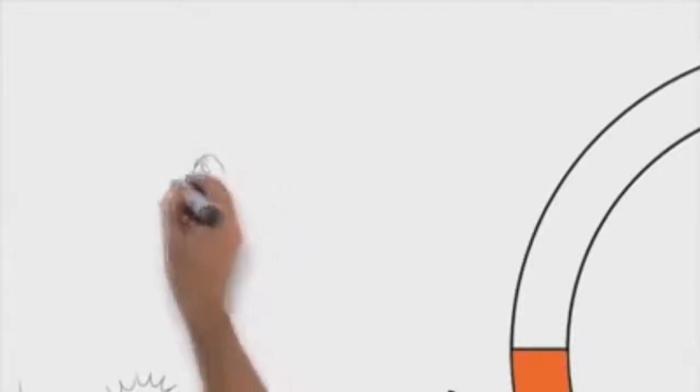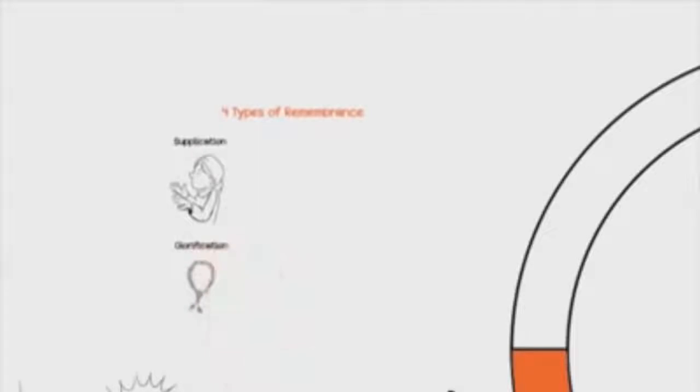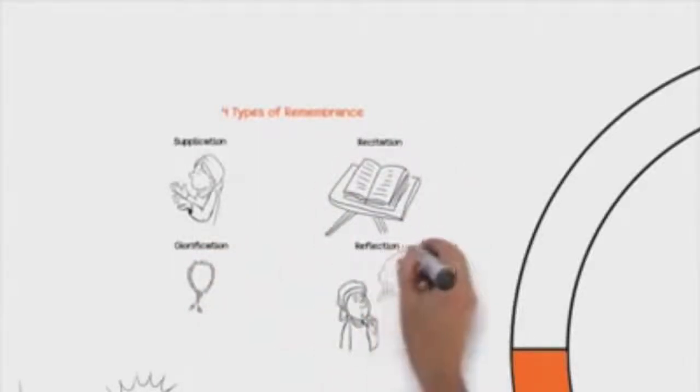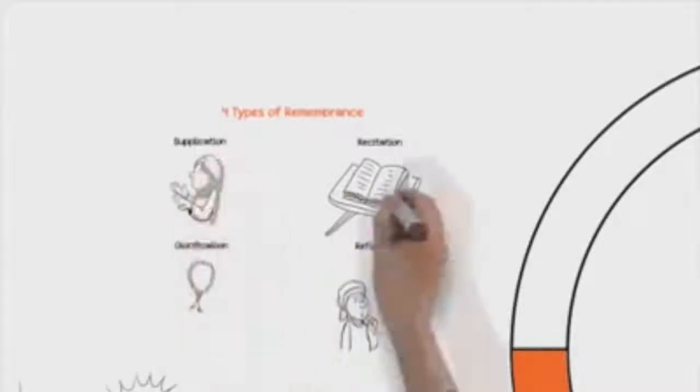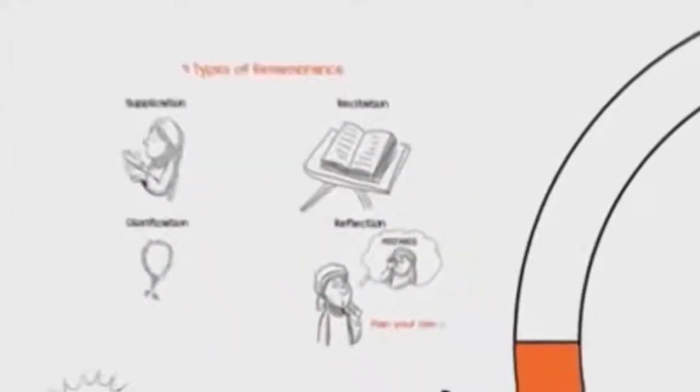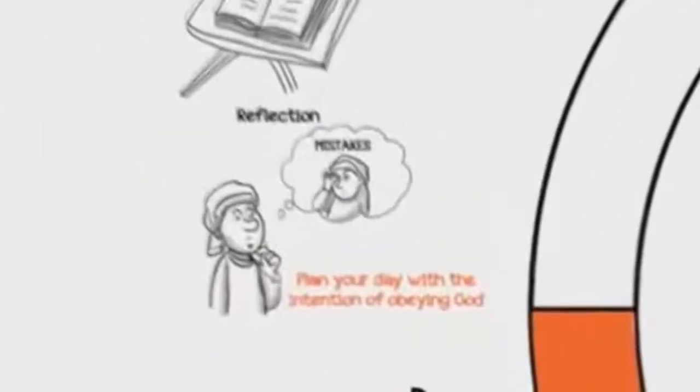Use your time until sunrise in four types of remembrance: supplication, glorification, recitation, and reflection. Reflect upon your mistakes and the nearness of your end, and carefully plan your day with the intention of obeying God.